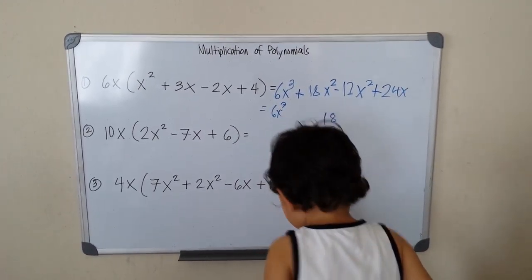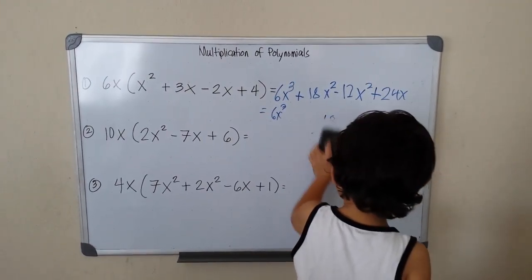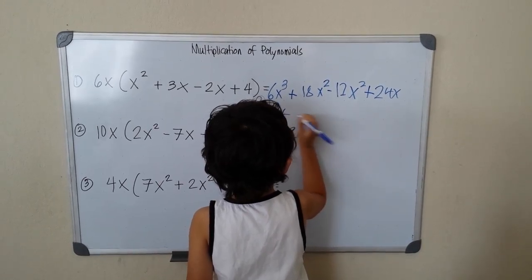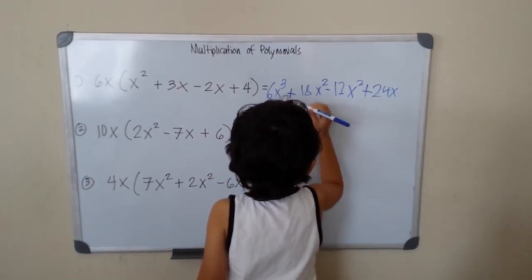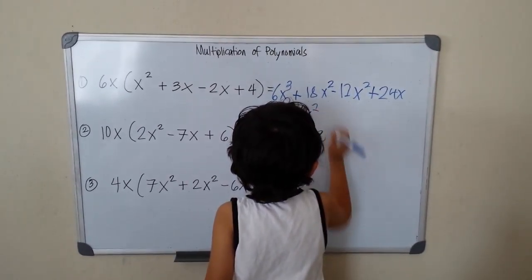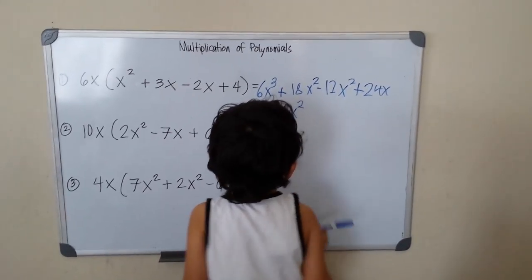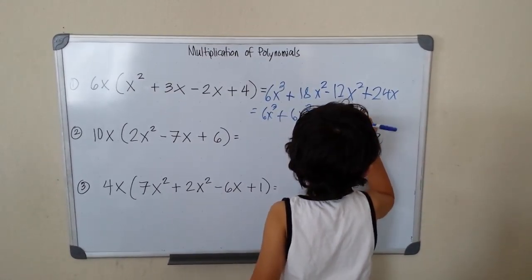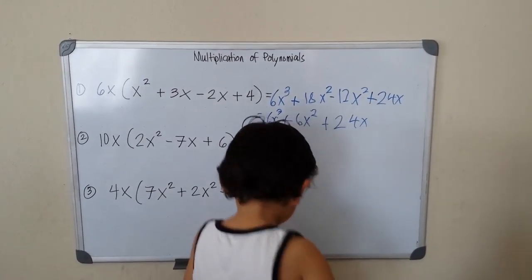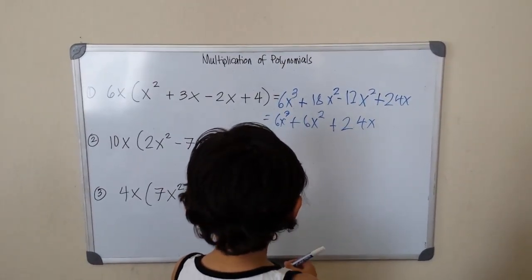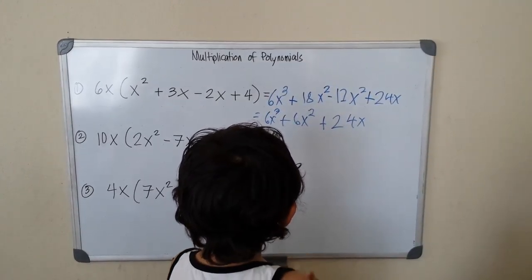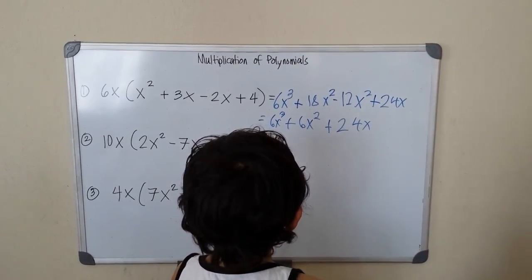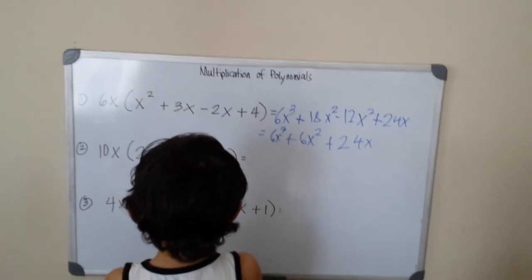So 6, 18 minus 12 is 6, 6x squared. Plus 24x. So that's 6x cubed plus 6x squared plus 24x. That's my final answer.